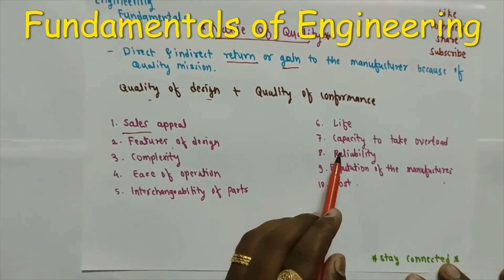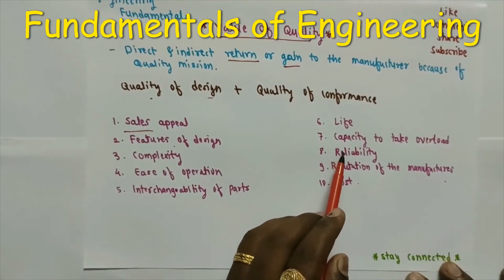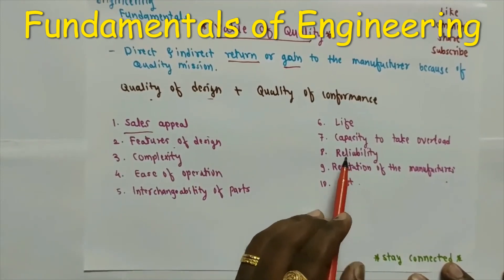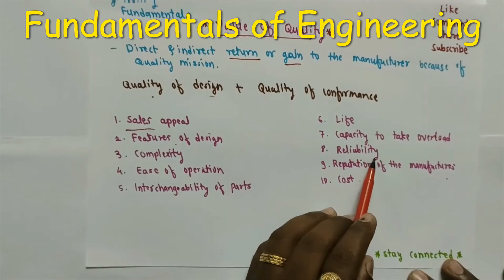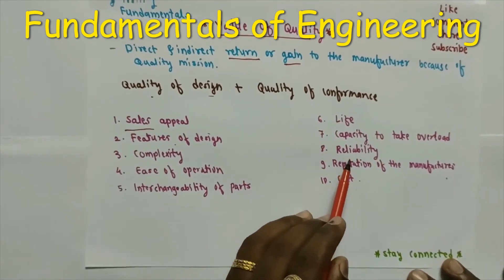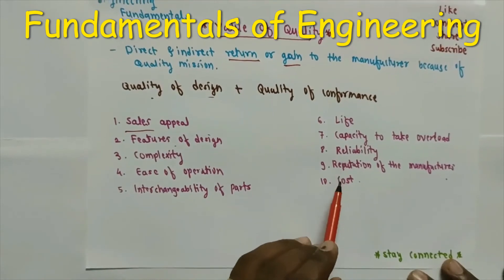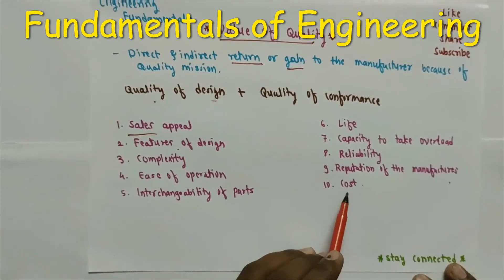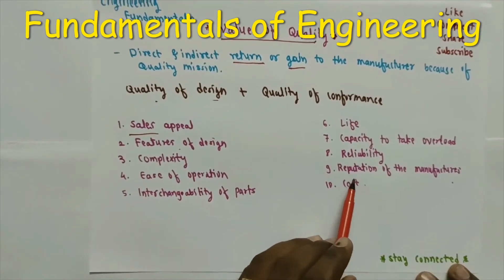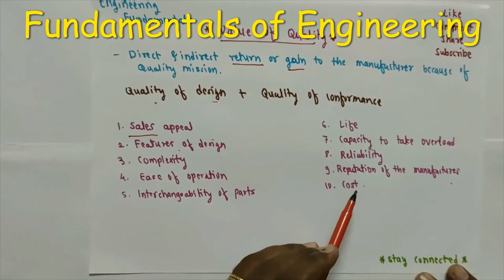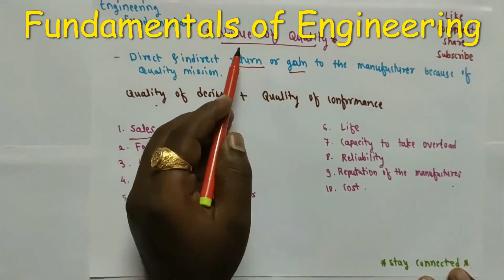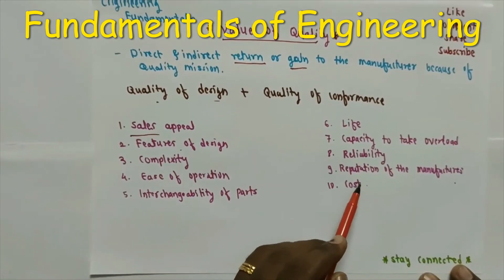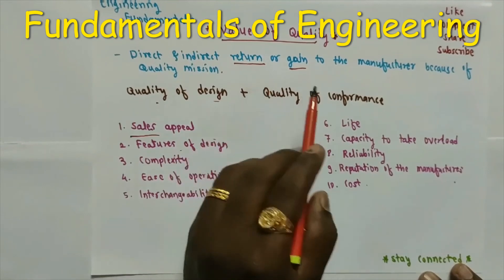Additional features contributing to value of quality include: capacity to take overload — the product should handle maximum load during operation — reliability, meaning how dependable the product is during operation, and the reputation of the manufacturer. If the manufacturer's reputation is developed in the market based on value of quality, product sales increase and it gives a financial return to the manufacturer.